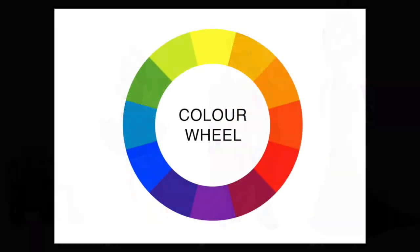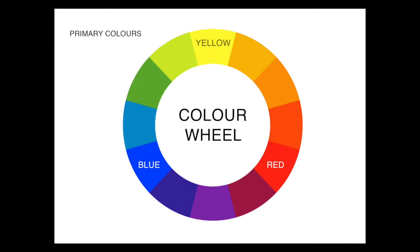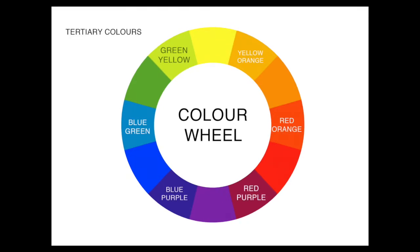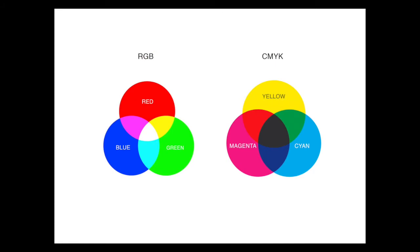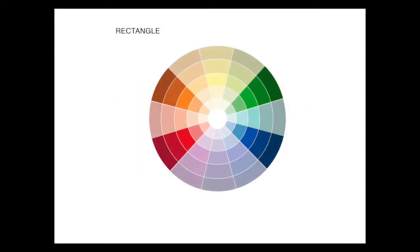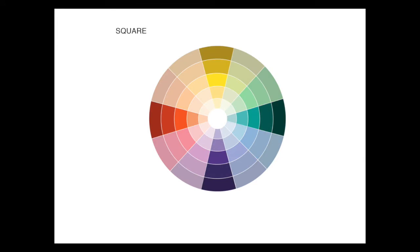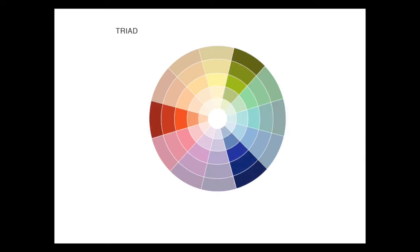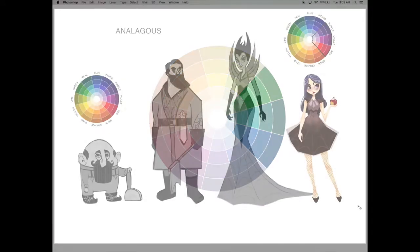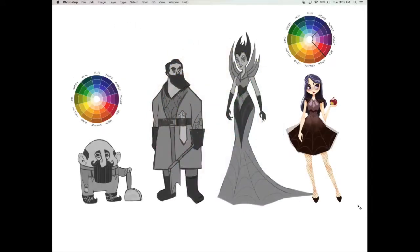Learn about the color wheel and the color spectrum, as well as the different color models like RGB for digital painting and CMYK for print. Discover what hue, tone, tint and shade mean, and how to use different color schemes on your own illustrations like complementary, analogous and triadic.